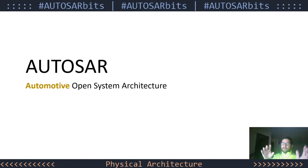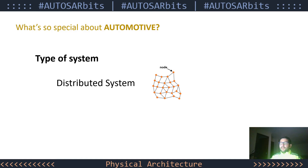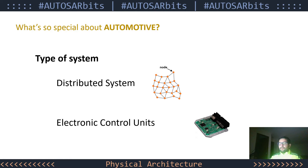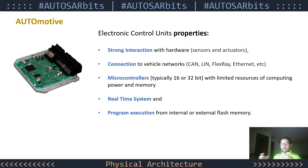For that we're going to focus on what automotive means for Autosar. What's so special about automotive? What type of system are we dealing with? The first characteristic is that it is a distributed system, and each node is in reality an ECU — an electronic control unit. According to the Autosar layered architecture, an ECU's properties are: strong interaction with hardware, connection to a vehicle network, microcontrollers, it is typically a real-time system, and program execution is from internal or external flash memory — that is, firmware.